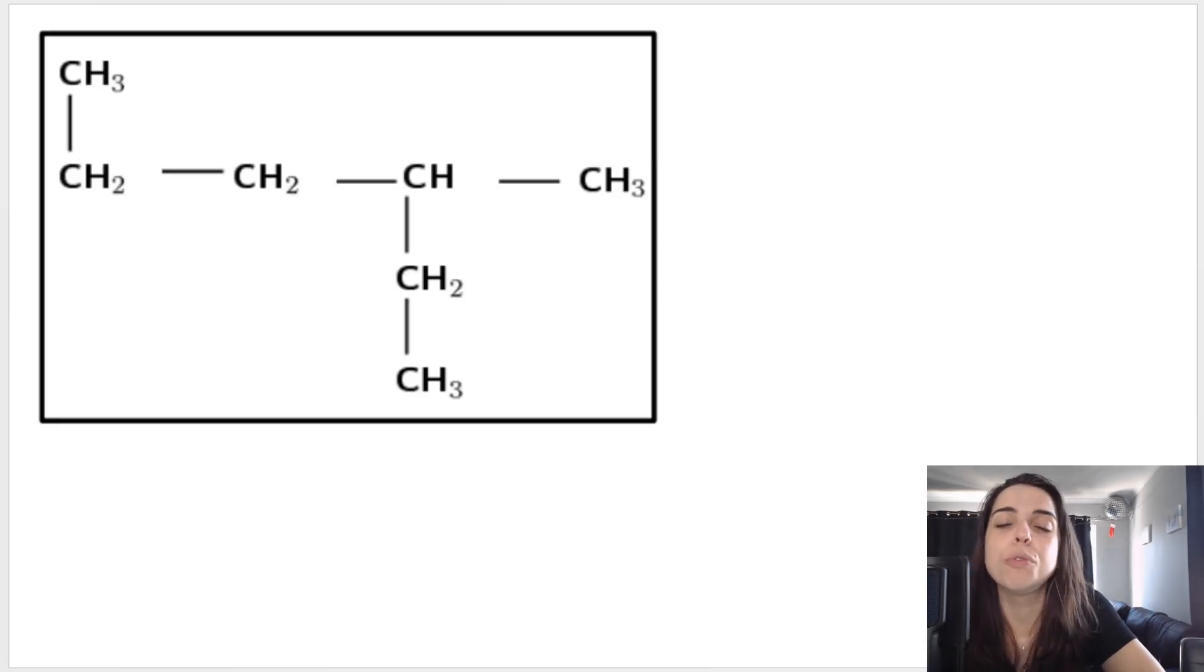Now, when naming alkanes, your first step is you have to look for the longest continuous carbon chain or the parent's chain. That means carbon attached to carbon, attached to carbon. And a lot of people think that it is the first chain that you see that runs horizontally. Not necessarily. The longest continuous chain can bend. It can curve. As long as a carbon is attached to a carbon, it is part of the chain, the parent chain.